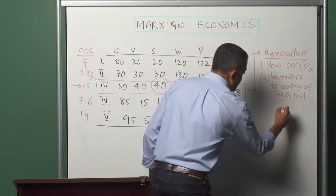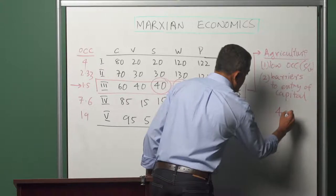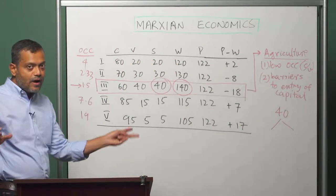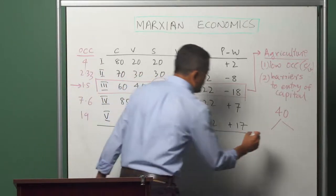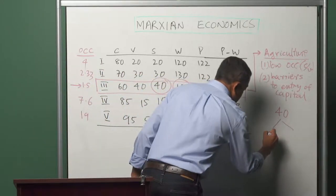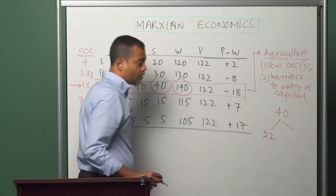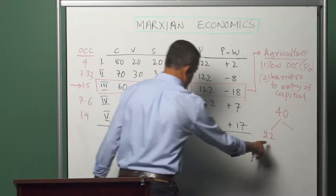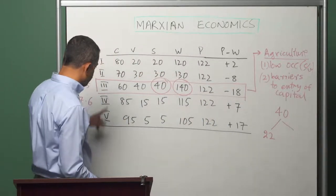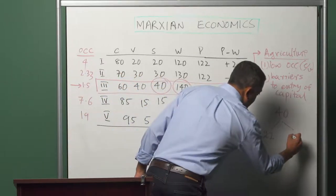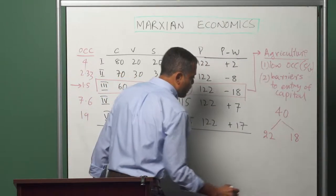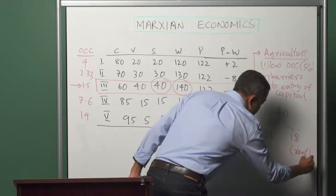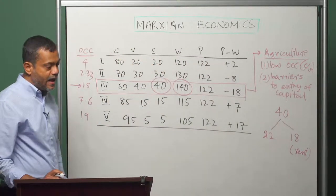What would happen is that the 40 units of surplus value would be divided: the capitalist farmers would get 22 units of surplus value and the landlord would get 18. This 18 would be the rent income of the owner of the land, and 22 would emerge as the profit of the capitalist organizing agricultural production using the land.